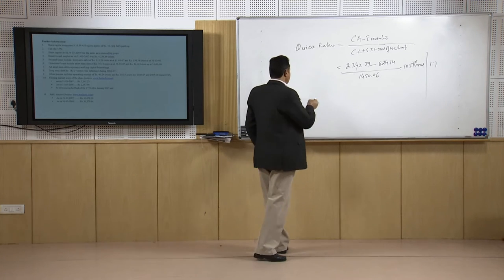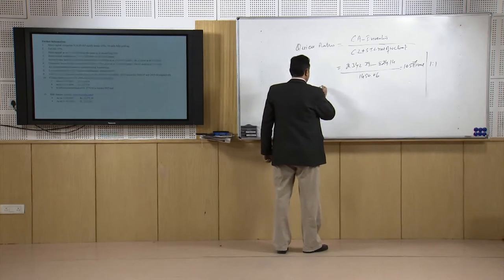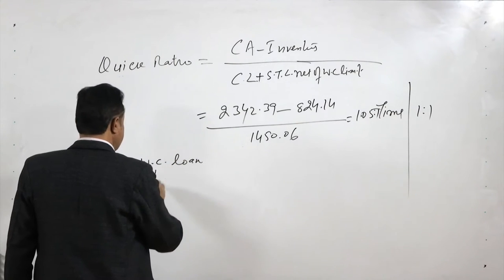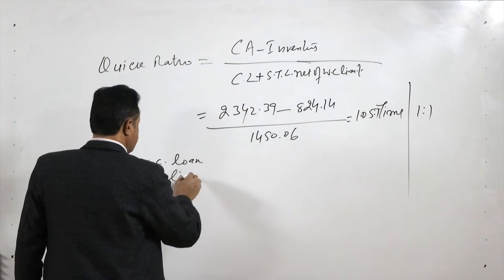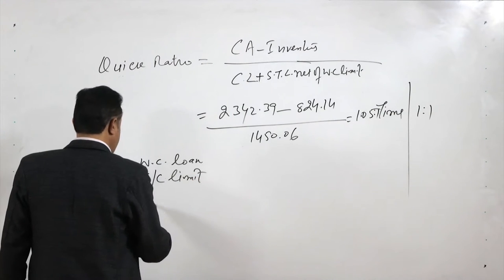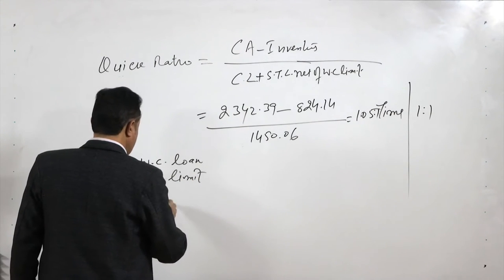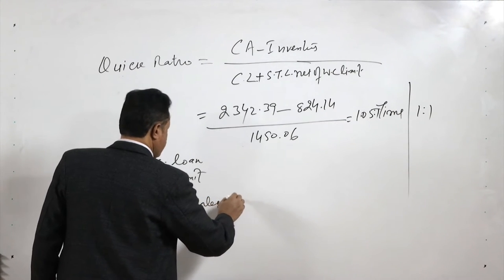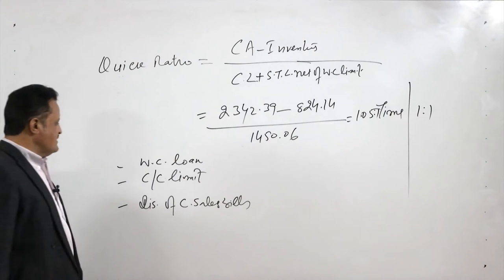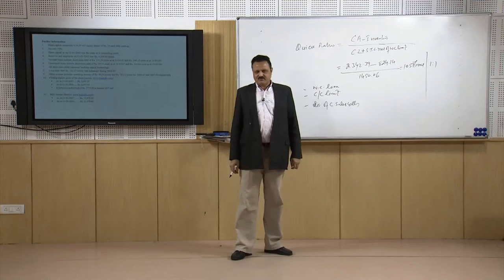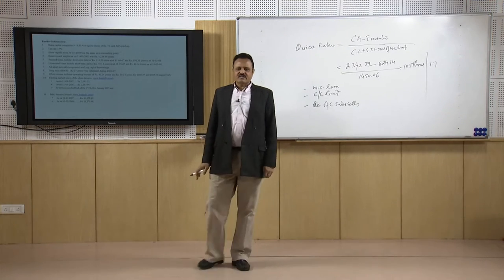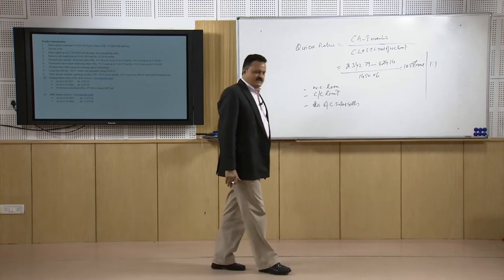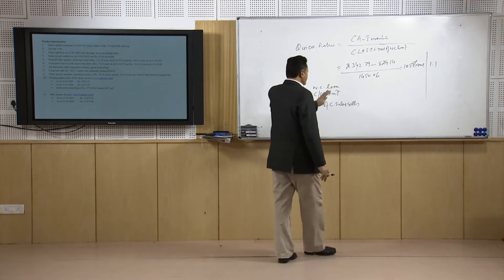The three ways to have working capital finance from banks are: first, the working capital loan; second, the CC limit or cash credit limit; and third, discounting of credit sales bills. When you take the working capital loan it becomes short term debt, which we include in current liabilities for calculating the quick ratio.